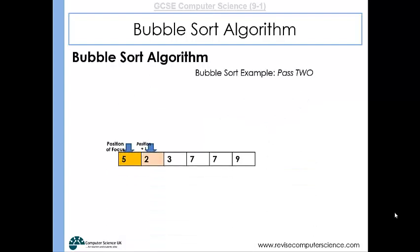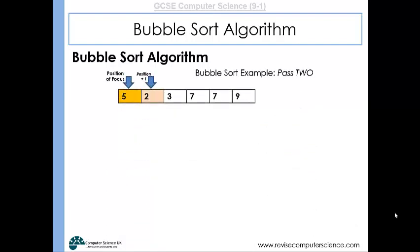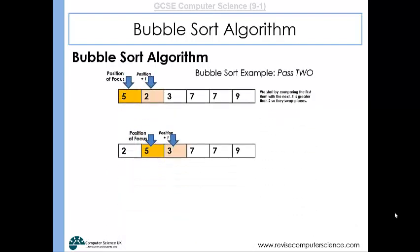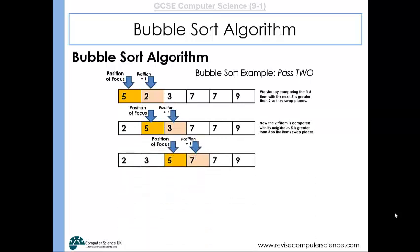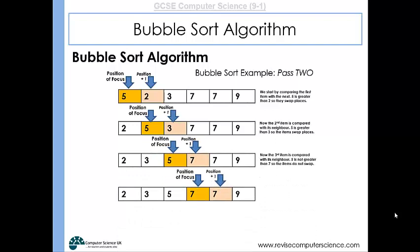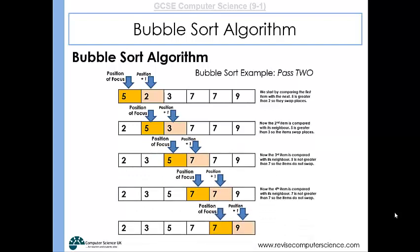As we go through pass two of our bubble sort, five and two are compared, they're in the wrong order so they swap. The five and the three are compared, they're in the wrong order so they swap. Five and seven are in the correct order, seven and seven is in the correct order, and seven and nine is in the correct order so they are now ordered.